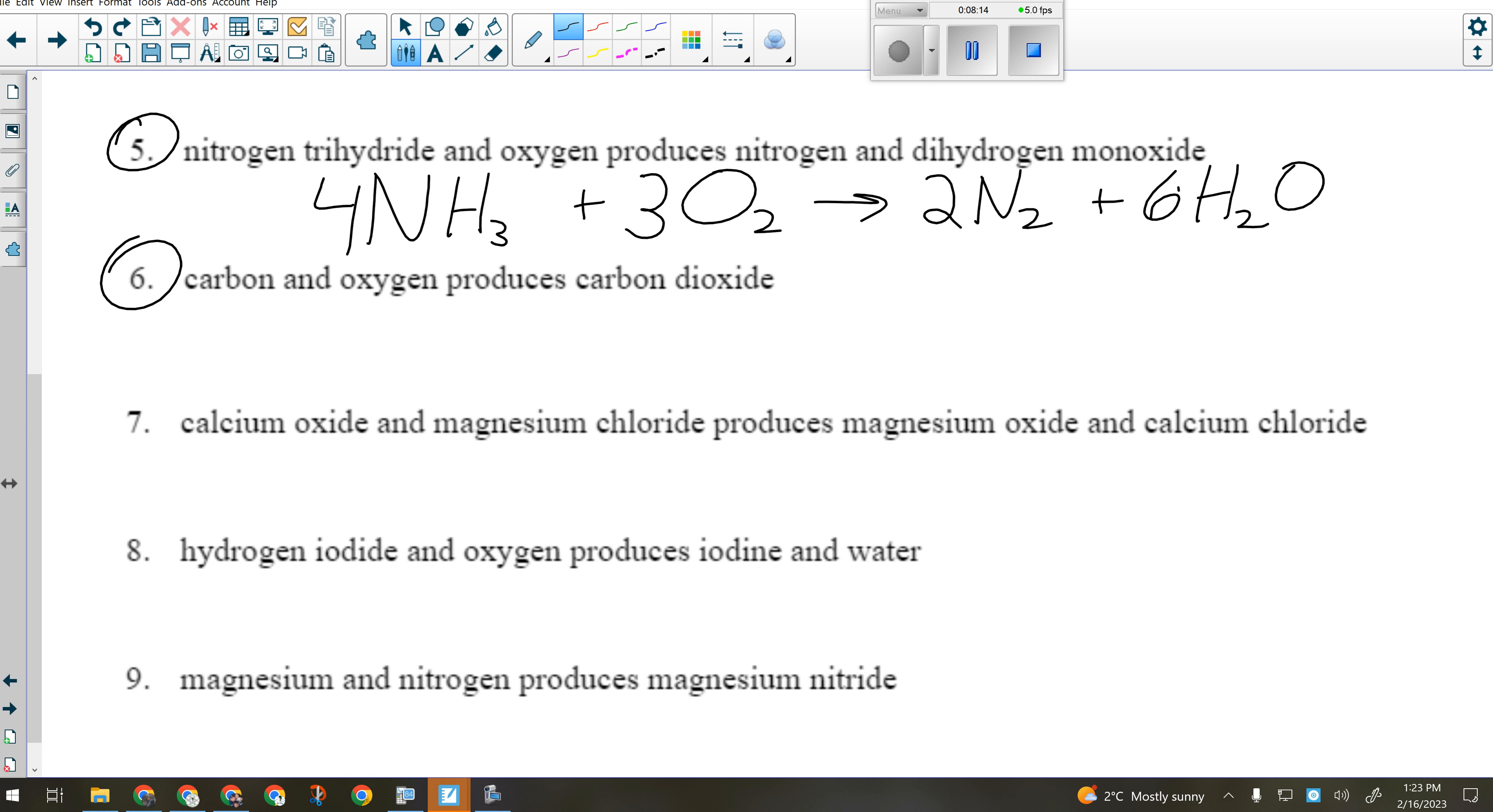So we got carbon—that's what carbon looks like. Which type was number five? We said it was kind of a single replacement, not a true single replacement. All right, so carbon looks like this when it's by itself, and it reacts with oxygen, which comes as O2, to produce carbon dioxide.